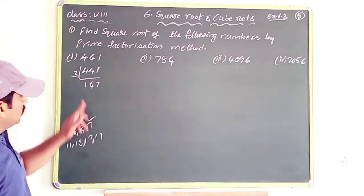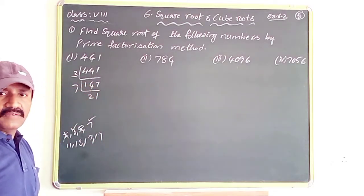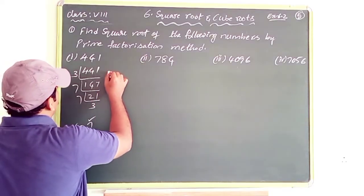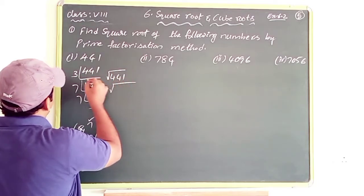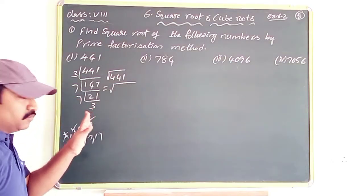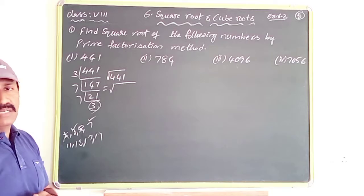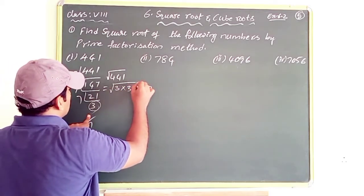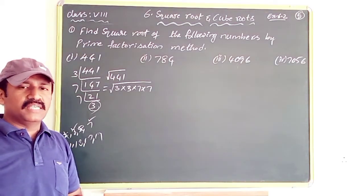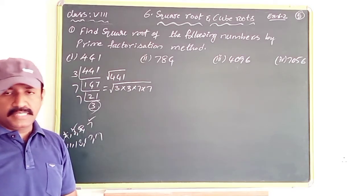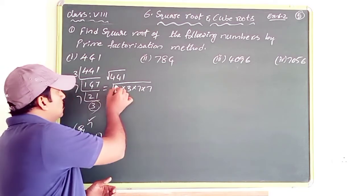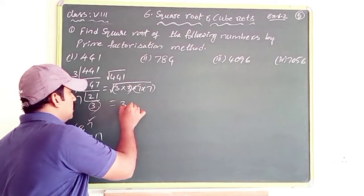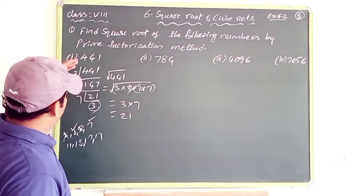Now, root of 441: we have 3 appearing 2 times and 7 appearing 2 times. A perfect square means a number multiplied by itself — like 5×5=25, 6×6=36. To find the square root, from each pair of identical factors, take one number. From the pair of 3s take one 3, and from the pair of 7s take one 7. So 3×7 = 21. The square root of 441 is 21.